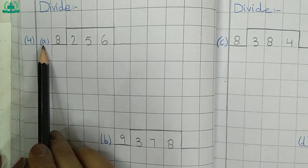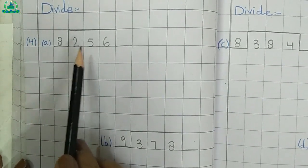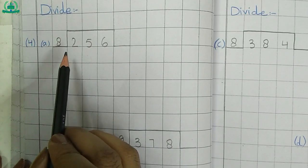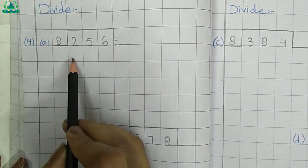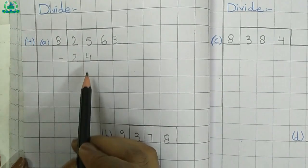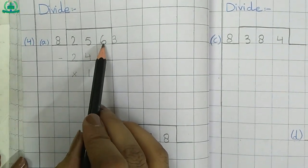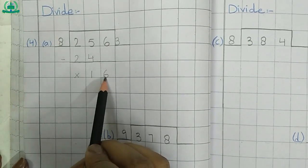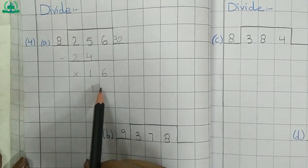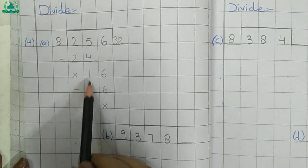Part 4, question A: 256 divided by 8. How many times do we need 8 to make 25? 8 times 3 is 24, and 8 times 4 is 32. 32 is greater than 24, so we take 24. 8 times 3 is 24. Minus: 5 minus 4, remainder is 1. 2 minus 2, no remainder. Now we move to our next digit, which is 6. Bring down 6, making 16. How many times do we need 8 to make 16? 8 times 2 is 16. Minus: 6 minus 6, no remainder. 1 minus 1, no remainder.